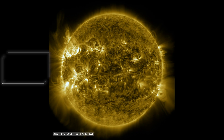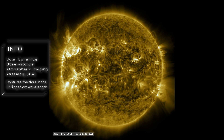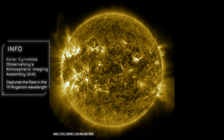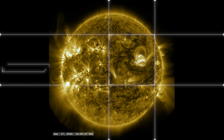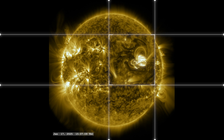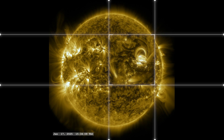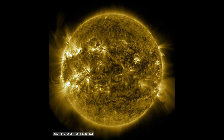Transitioning to the 171 angstrom filter, we observe the sun's upper atmosphere — the corona — where temperatures reach around 600,000 Kelvin. This view emphasizes the intricate coronal loops that become illuminated post-flare, tracing the sun's magnetic field lines. The reconfiguration of these magnetic structures during flares can accelerate particles to near light speeds, contributing to space weather phenomena that may pose risks to satellites and astronauts. Monitoring these changes is crucial for space weather forecasting and protecting our space-based infrastructure.